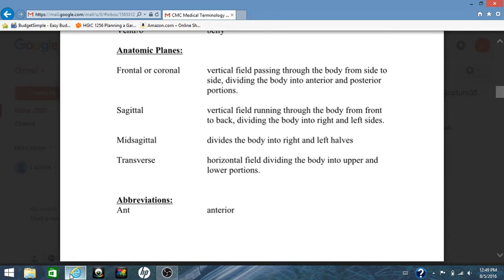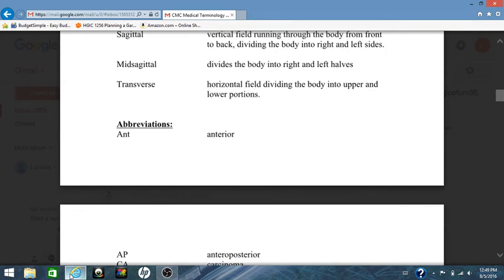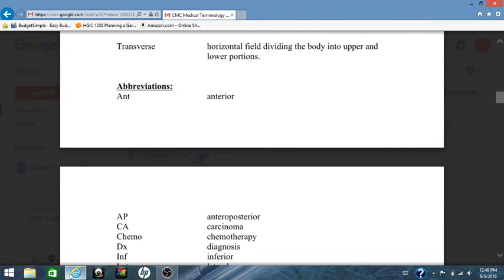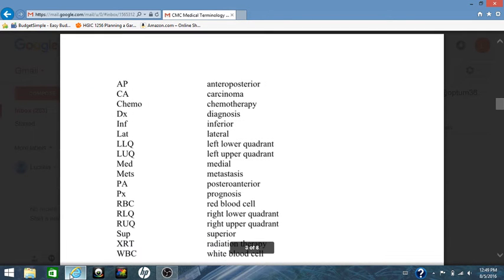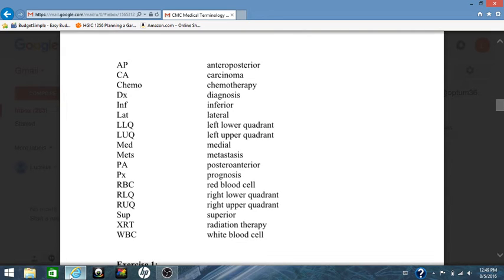Your abbreviations for this chapter are A and T stands for anterior. AP stands for anterior or posterior. CA, carcinoma. Chemo, chemotherapy. DX, diagnoses. INF, inferior. LAT, lateral. LLQ, left lower quadrant. LUQ, left upper quadrant.